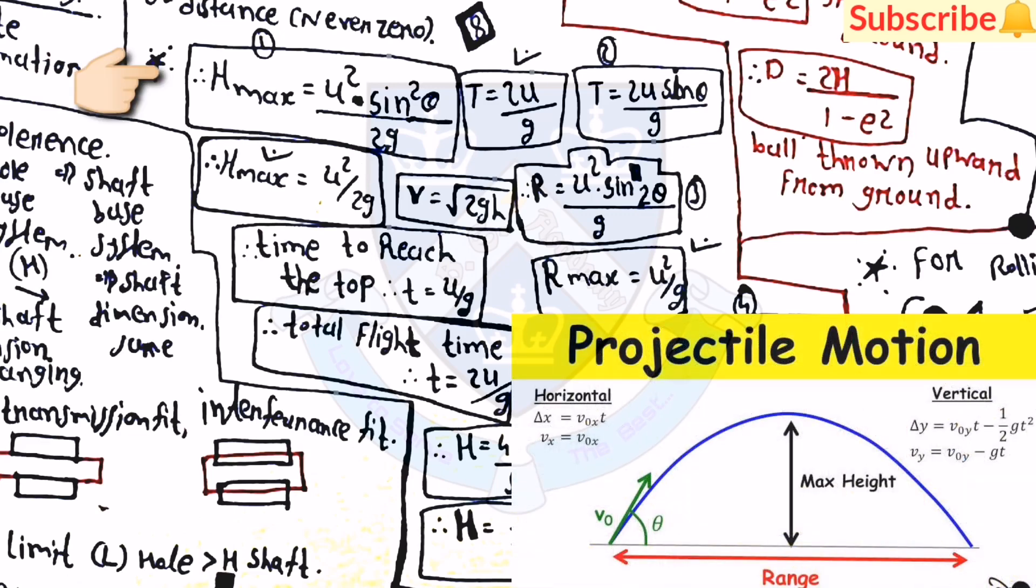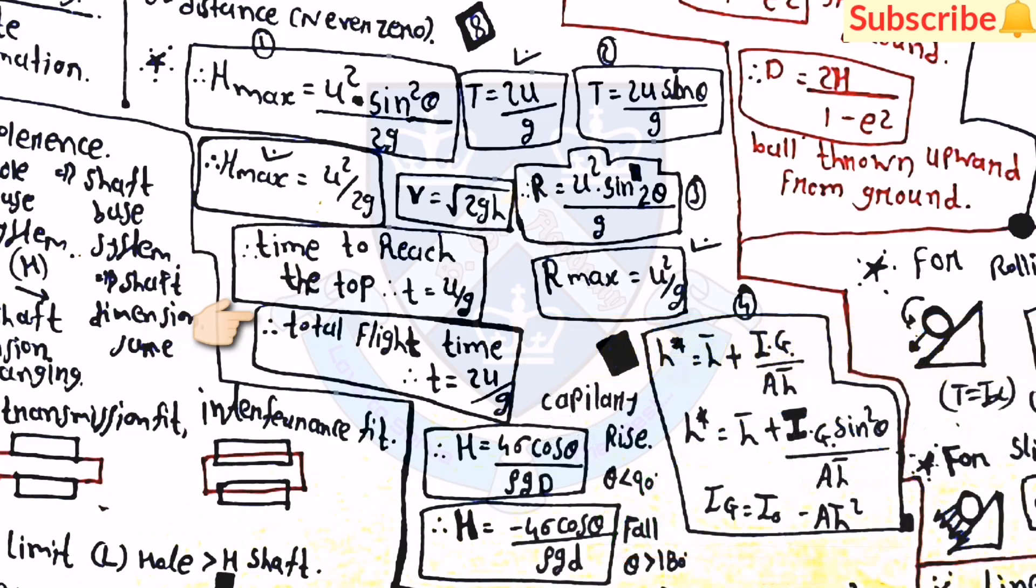Then h_max is equal to u squared sin squared theta divided by 2g. Then t is equal to 2u sin theta by g. Then capital T is equal to u sin theta by g. Then h_max is equal to u squared by 2g, and v is equal to square root of 2gh. R is equal to u squared sin 2theta by g. Then R_max is equal to u squared by g. Then time to reach the top t is equal to u by g. Then total flight time T is equal to 2u by g.